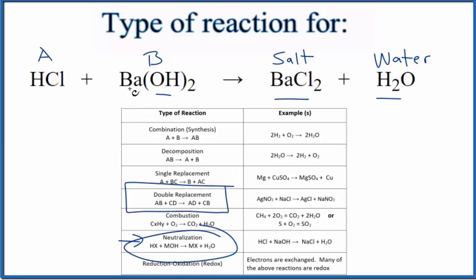That's because the barium and the hydrogen, they switch places. So the hydrogen ends up with the OH, you have HOH, that's water, and the barium ends up with the chlorine. That's the BaCl2.